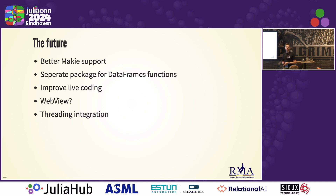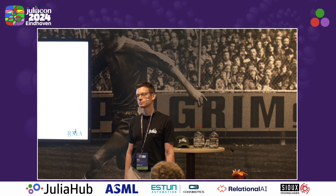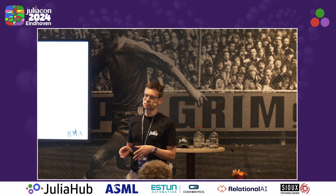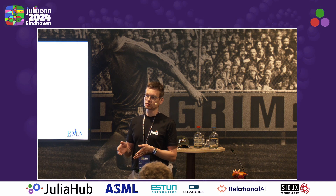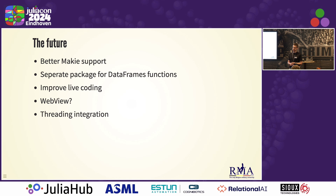That concludes the presentation. If you have any questions — can you comment more on this threading integration? It's possible to have foreign threads in Julia, so you have a thread for example the rendering thread in an OpenGL Qt application. If you do nothing special and it calls a Julia function, the application will crash. Julia now has functionality to register these foreign threads, but I tried exploiting this and there were still problems — it didn't crash anymore but I got a lockup, and I haven't had the time yet to investigate why it doesn't work as it should.